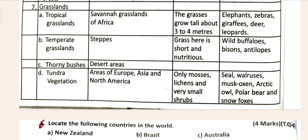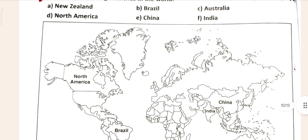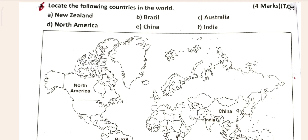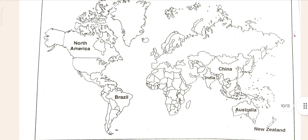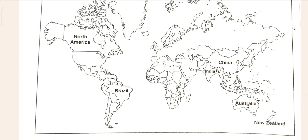I hope that is clear for you. Now this is the sixth one: 'Locate the following countries in the world — New Zealand, Brazil, Australia, North America, China, India.' Brazil is my favorite country. I live in India, so I love India, but Brazil is also a favorite. Brazil is in South America, on the lower side. You can see India, China, Australia, and New Zealand on the map as well.